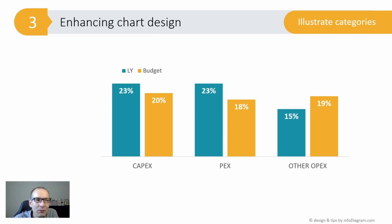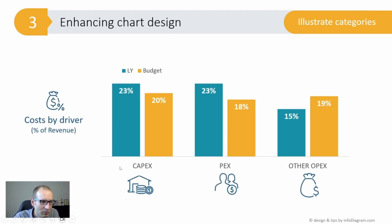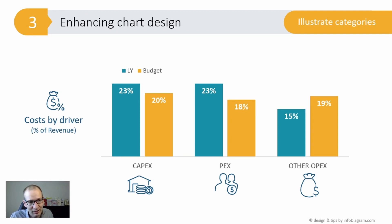One thing we can do to enhance the chart and make it look less default is to illustrate the categories. We have three categories here, and the way to illustrate them is to add icons corresponding to the content. Sometimes it's easy when you have concrete topics like a computer or a card, and finding a specific icon is straightforward. Other times it's harder with more abstract terms, like expressing capital expenses versus personal expenses.